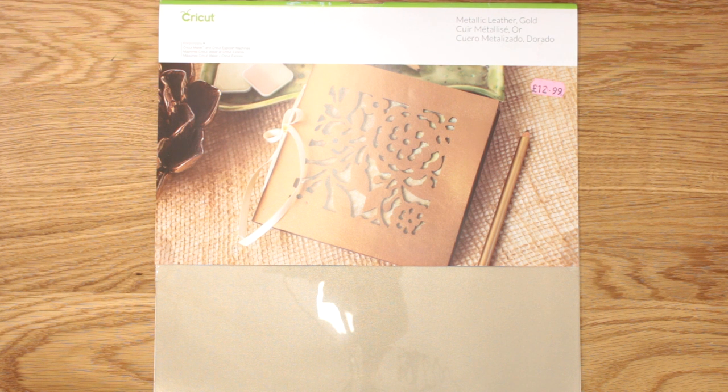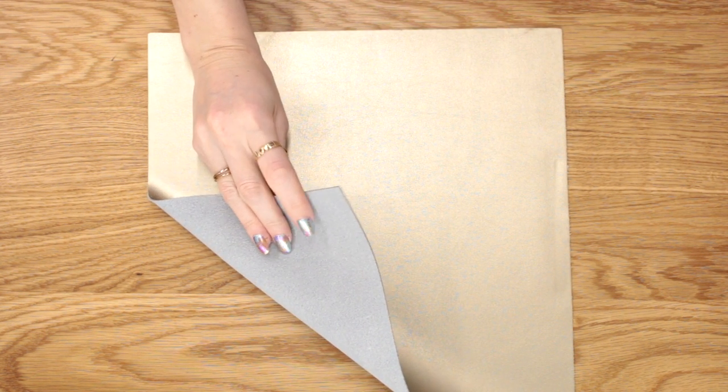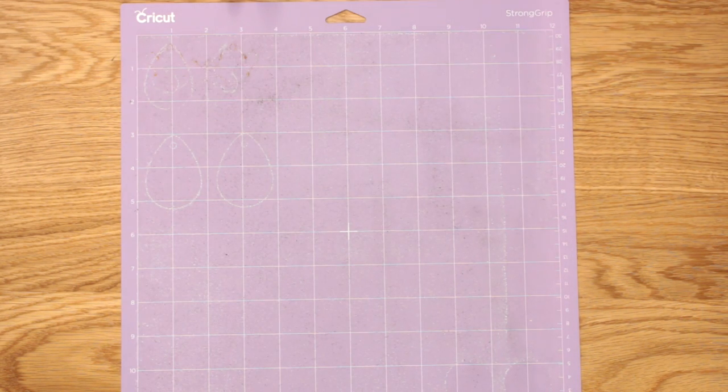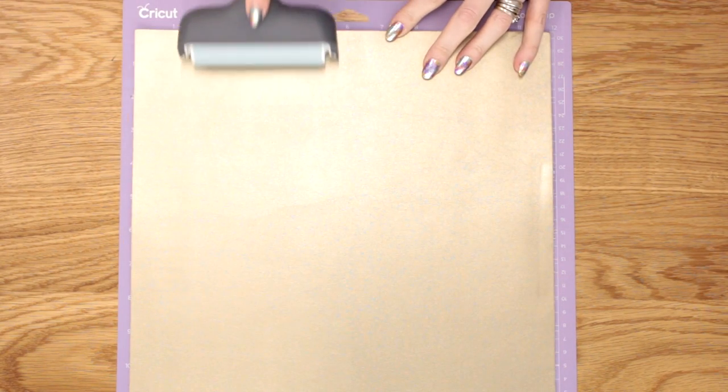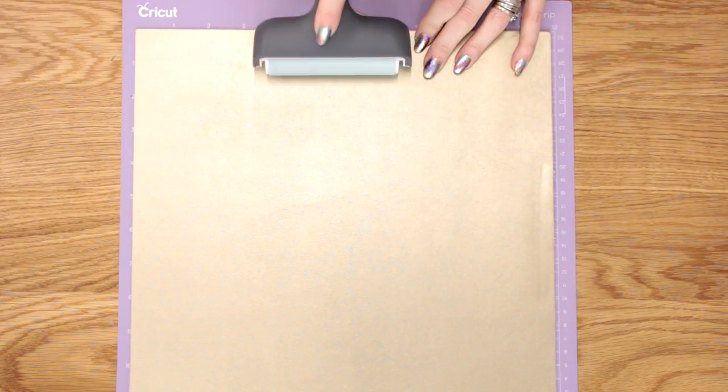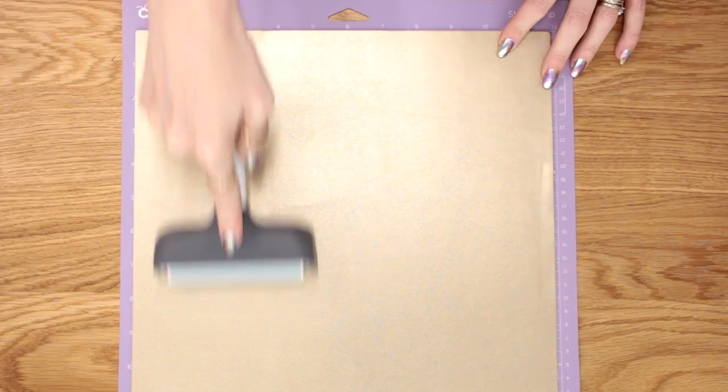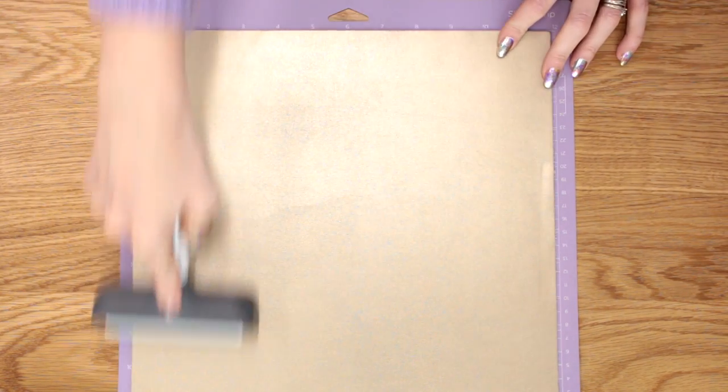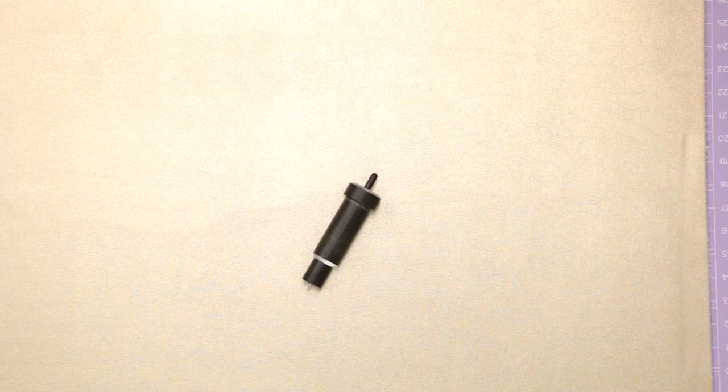I've got the Cricut metallic leather in gold here. This can be used with any of your Explore machines or your Maker—you want to use your deep cut blade with this. It is incredibly pretty but also incredibly thick. You want to make sure that you use a purple strong grip mat and go in with your Cricut fabric brayer and really work that into the mat. If you're working with a well-used mat, I suggest that you get some masking tape and mask around the area to really secure the metallic leather to the mat.